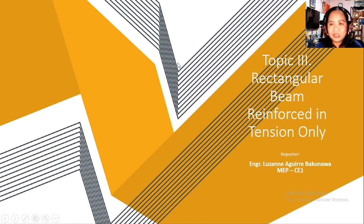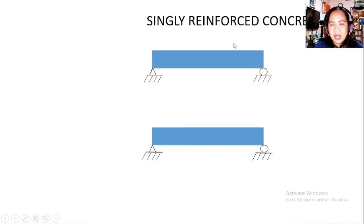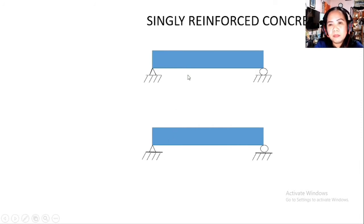Hi guys, I'm going to report about Topic 3, which is the rectangular beam reinforced in tension only, commonly called the singly reinforced beam. I am your reporter, Engineer Luzane Aguirre Bakunawa, MEPCE1. In my discussions, I'll be basing on the NSCP 2015 for my code reference.